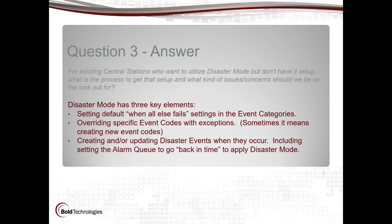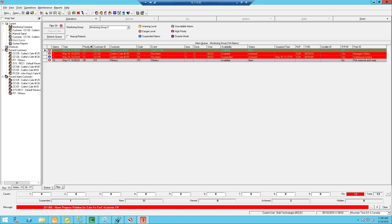Disaster mode has three key elements. You have to set your defaults in your event categories, any specific override — sometimes that means creating new event codes in the event codes form — and creating or updating your disaster events when they occur. Let me flip over and take a look at that.